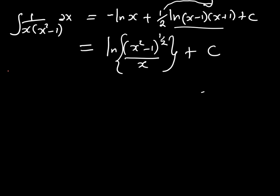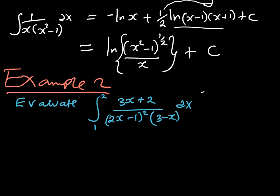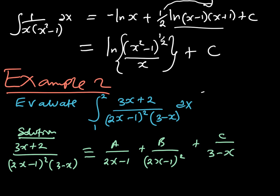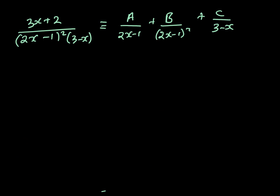Let us see example 2. In example 2 they want us to evaluate a definite integral. We begin by resolving 3x plus 2 over 2x minus 1 squared times 3 minus x into partial fractions. This gives A over 2x minus 1, plus B over 2x minus 1 squared, plus C over 3 minus x — because 2x minus 1 is a repeated linear factor.